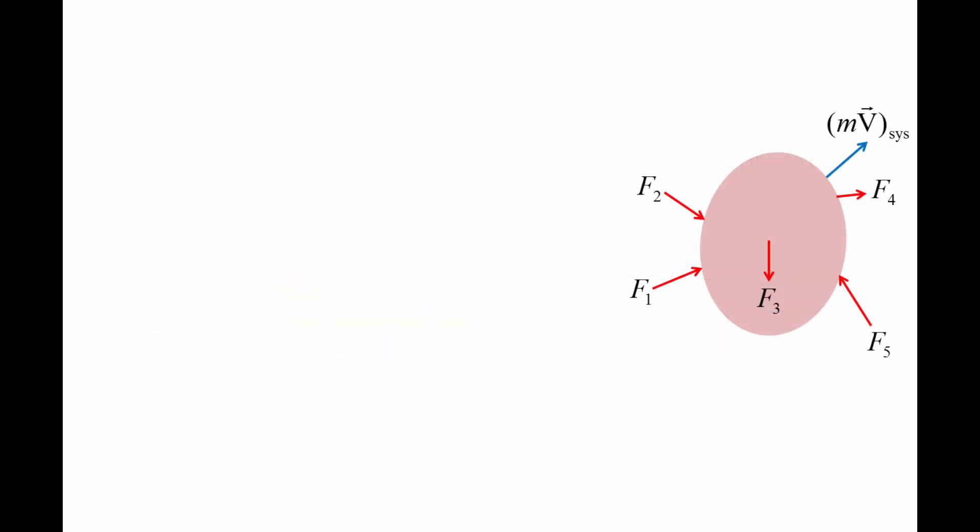Here we have a mass shaded in pink with a certain momentum, mv. We will call this mass our system. Various external forces are acting on the system. The conservation of linear momentum equation for a system states that the time rate of change of a system's linear momentum, D(mv)/Dt, is equal to the sum of external forces acting on the system. Here we use capital D's for the time derivative to indicate that we are taking the system point of view.